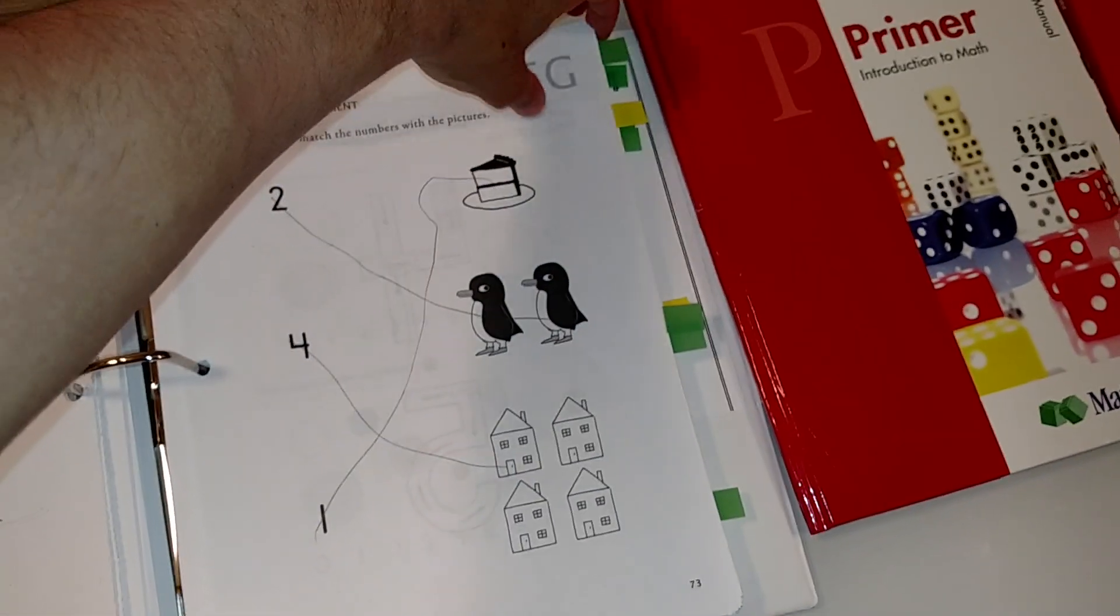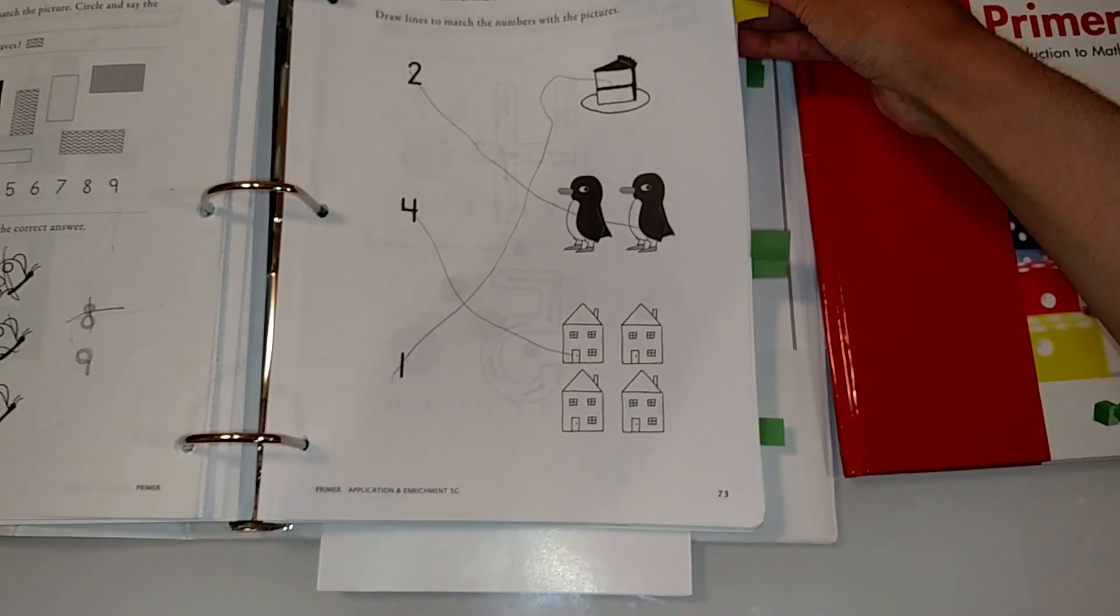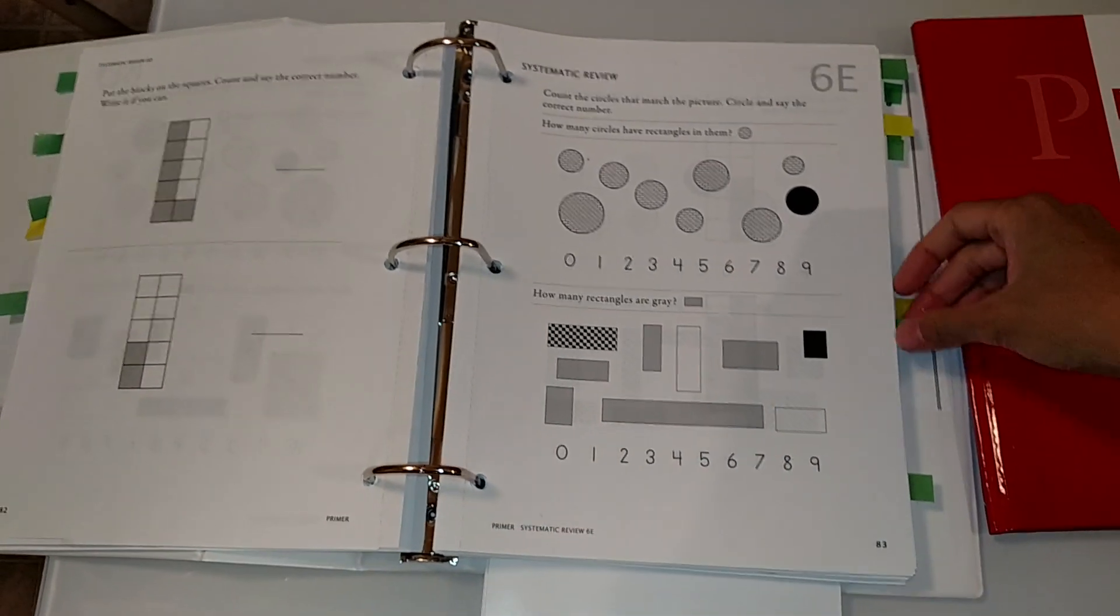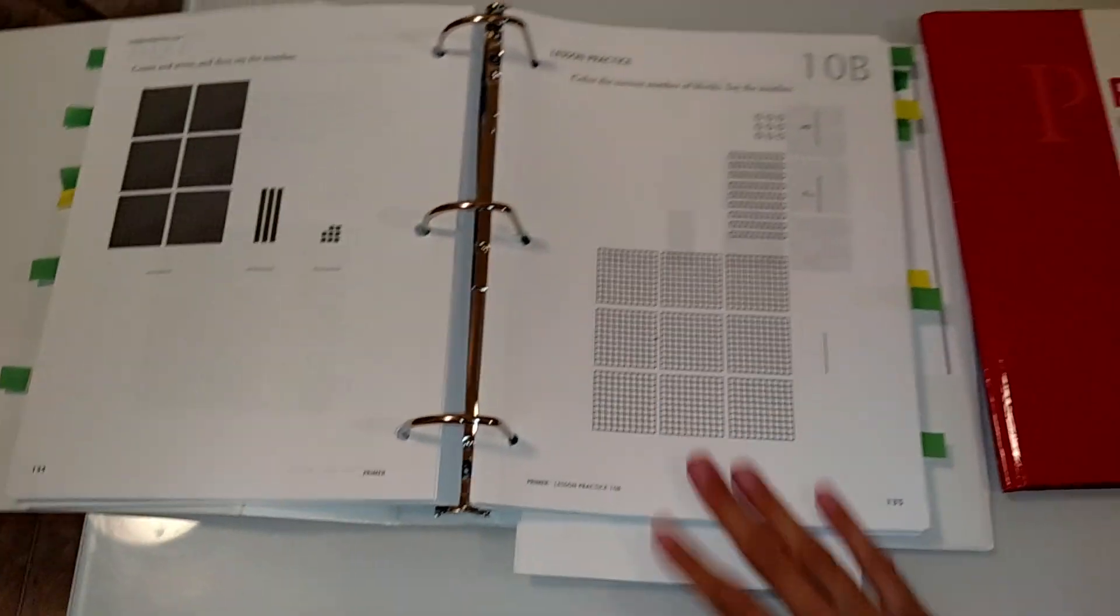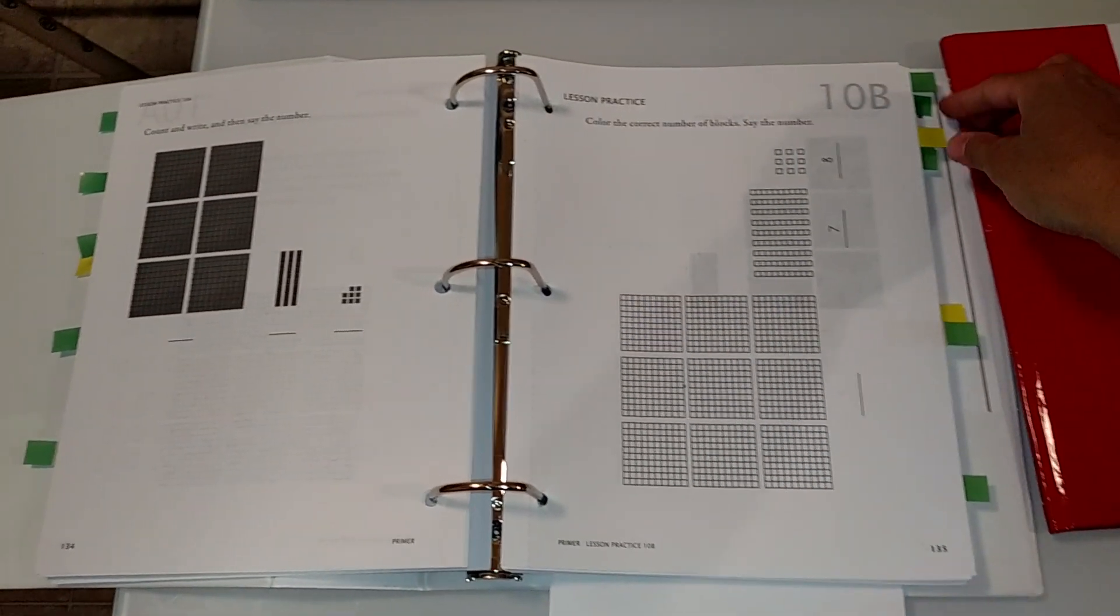Let me skip around the book so you guys can take a look. It brings 30 different lessons so it should definitely last a year. It even goes into place value, so we saw some number quantity, some number recognition, it goes into place value.